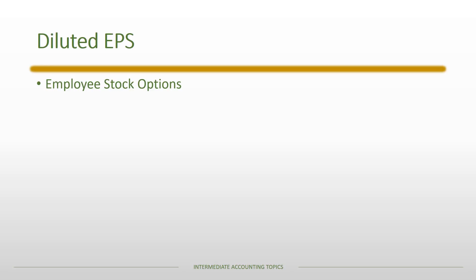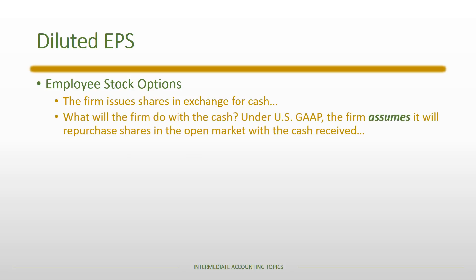For employee stock options, if exercised, the firm would issue shares in exchange for cash. Under US GAAP, the firm assumes it will repurchase shares in the open market with any cash received — this is just an assumption for calculating diluted EPS. There is a net effect on the denominator: if we issue more shares than we assume we repurchase, that dilutes EPS and we include those options. If the assumption would decrease shares outstanding, that's anti-dilutive and we ignore it.